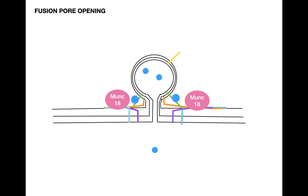As neurotransmitters are released into the synapse, a very important process is occurring: the extrusion and seclusion of calcium. In order to end vesicular fusion, we have to get rid of calcium.